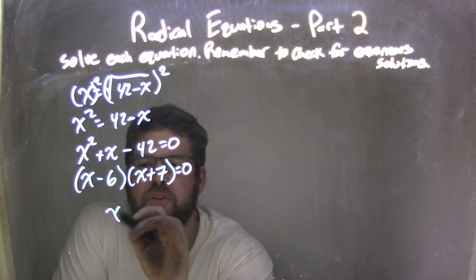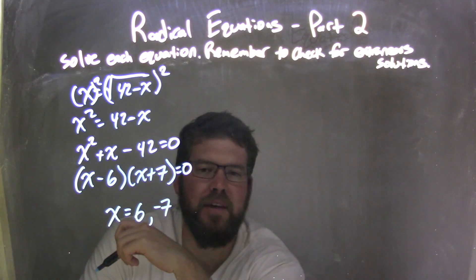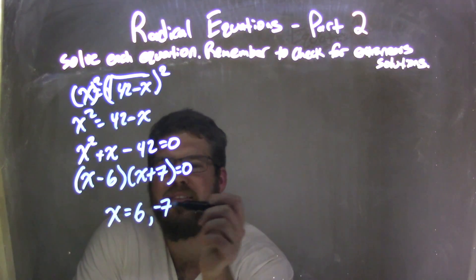My two solutions are x equals positive 6 and negative 7. We set both those parentheses equal to 0 to solve. Now I need to check for extraneous solutions.